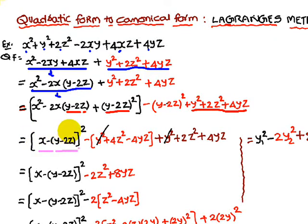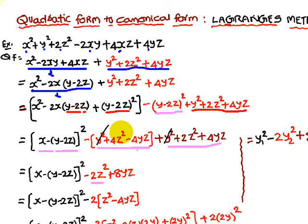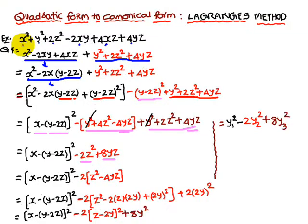So we have (x minus y minus 2z) whole squared. Next, you expand the subtracted (y minus 2z) squared, which gives y squared plus 4z squared minus 4yz. Now, minus y squared and plus y squared cancel each other. Minus 4z squared plus 2z squared gives minus 2z squared. And minus 4yz plus 8yz gives plus 8yz.